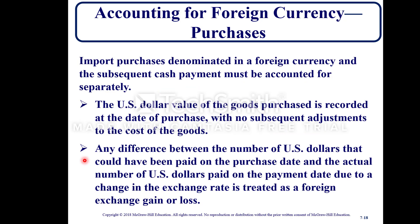Import purchases denominated in foreign currency and subsequent cash payments must be accounted for separately. The U.S. dollar value of goods purchased is recorded at the date of purchase with no subsequent adjustments to the cost of goods. Any difference between the number of U.S. dollars that could have been paid on the purchase date and the actual amount paid on the payment date, due to a change in the exchange rate, is treated as a foreign exchange gain or loss.